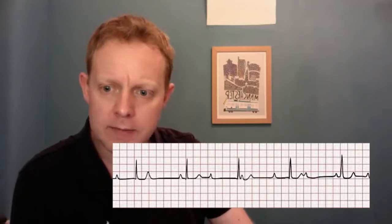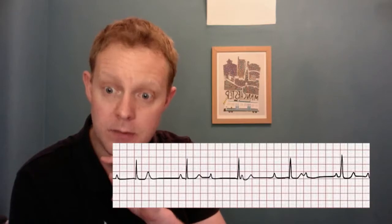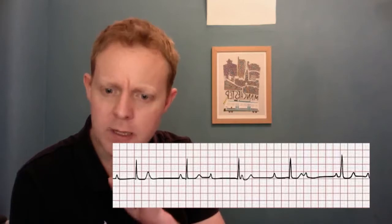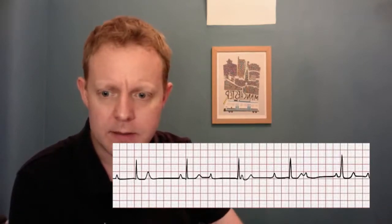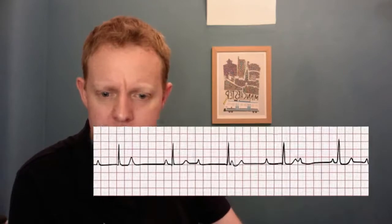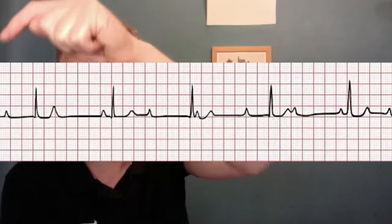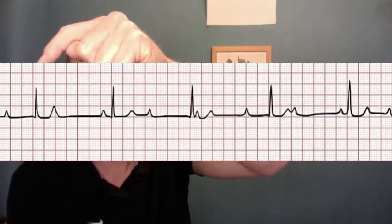Moving on, let's have a look at this one. This one's got electrical activity. It's very, very slow and regular. The QRS rhythm is definitely regular. There's narrow complex and there's atrial activity — but how is it related to the ventricular activity? Let's have a look. What have we got here? A P wave, then a massive PR interval, and then a QRS complex.